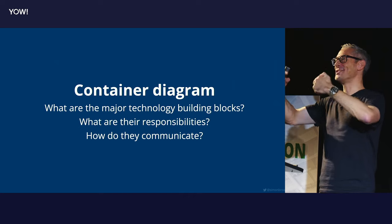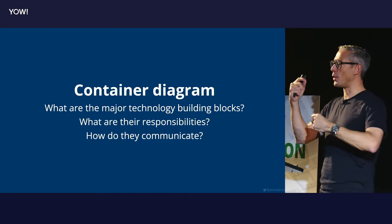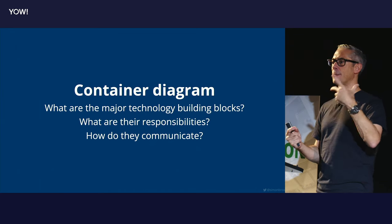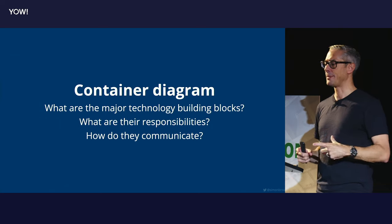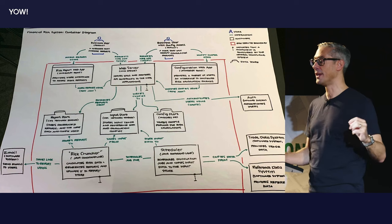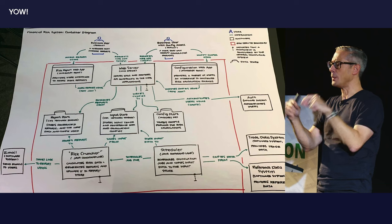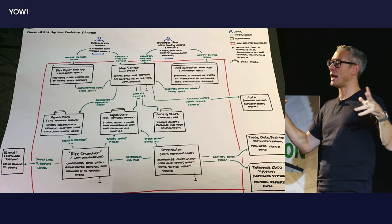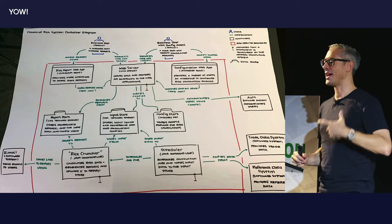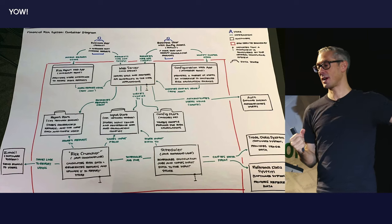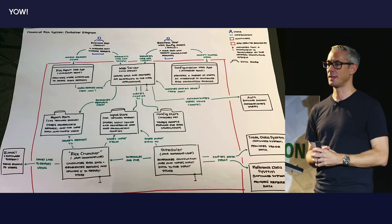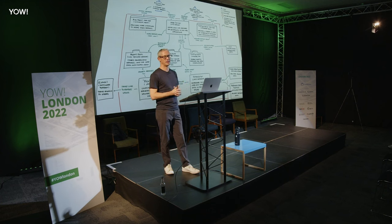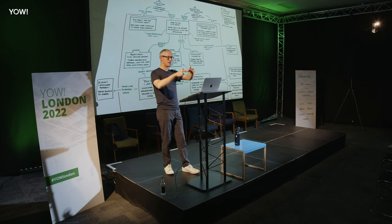So to draw this diagram, there's a different set of questions: what are the major technology building blocks? What is the set of applications and data stores we need to put together to build this software system? What are the responsibilities of these units and how do they talk to one another? Answer those questions and you can draft up a container diagram. Now we've zoomed into the system boundary, we're still showing people and external systems around the edge. We can see we have a couple of JavaScript React apps, a Java Spring app at the top, a bunch of Java command line apps at the bottom, and some data stores in the middle. Now we're targeting developers and architects, whereas the previous diagram is much broader in its audience.